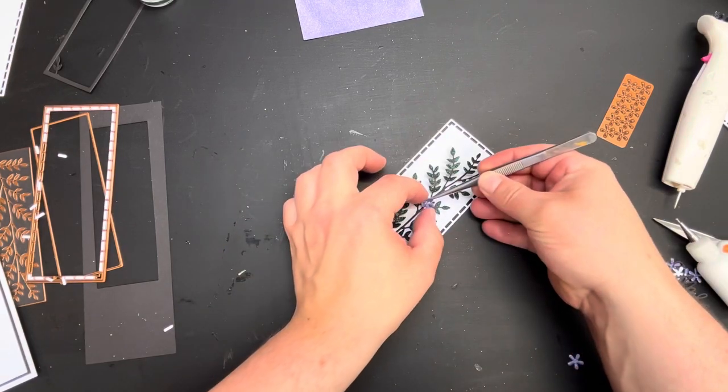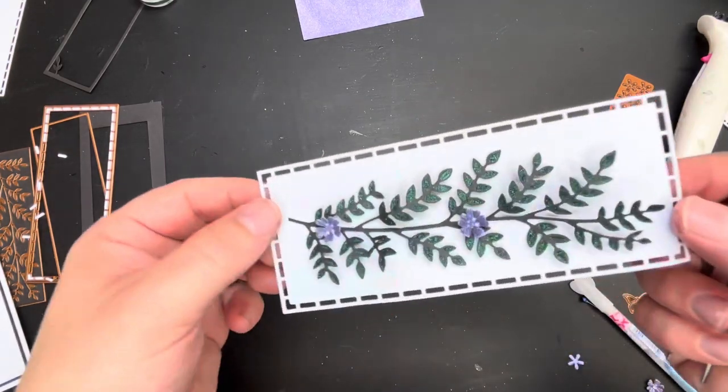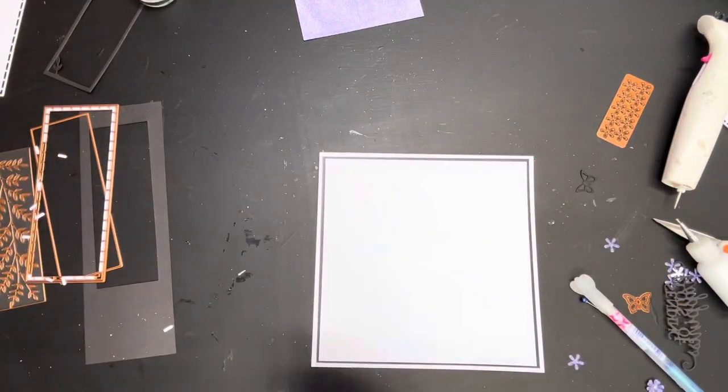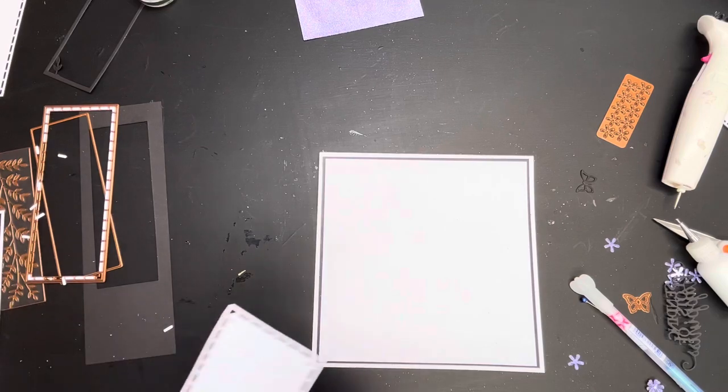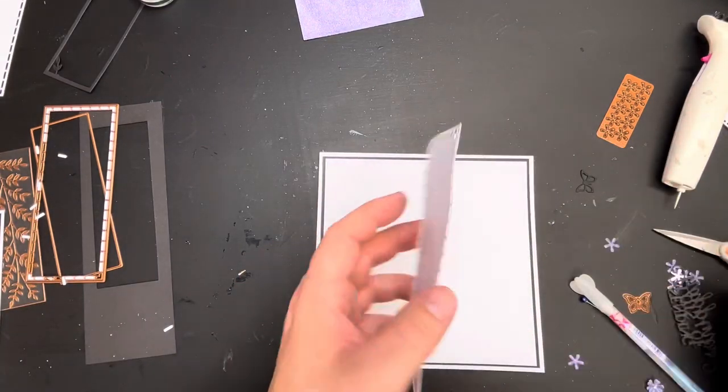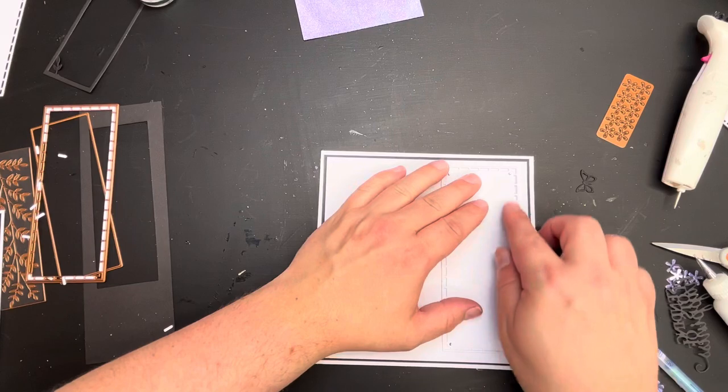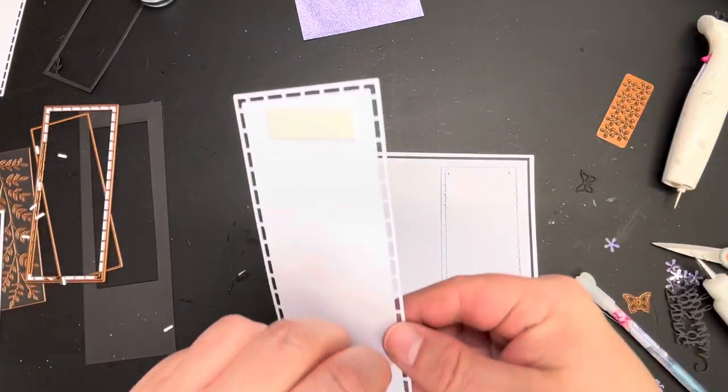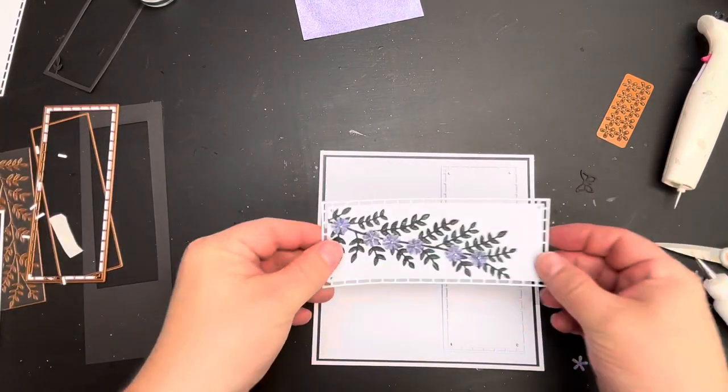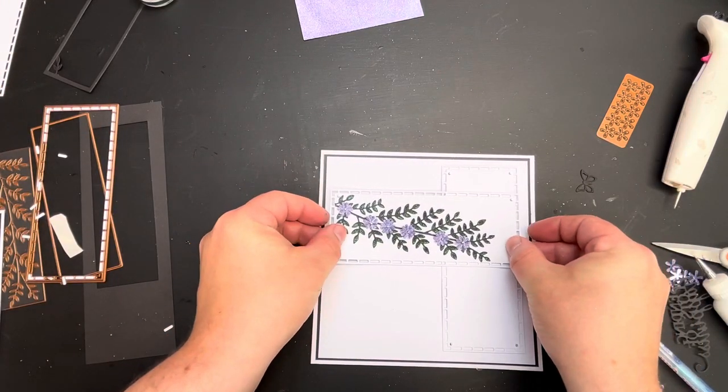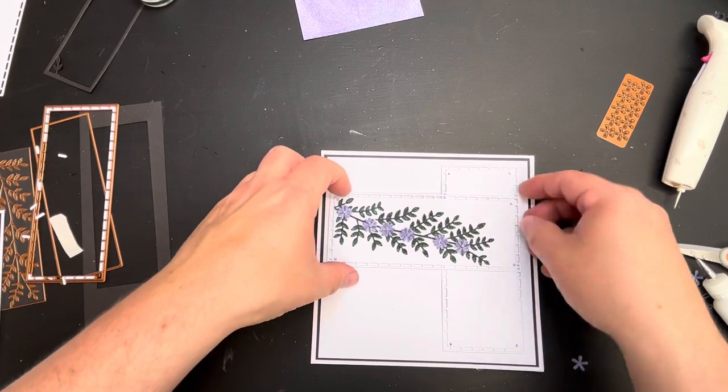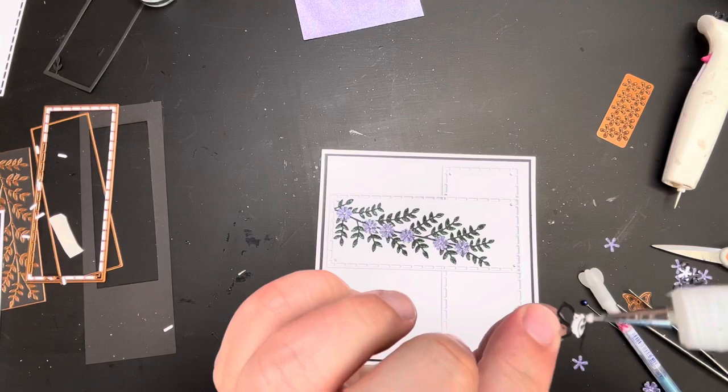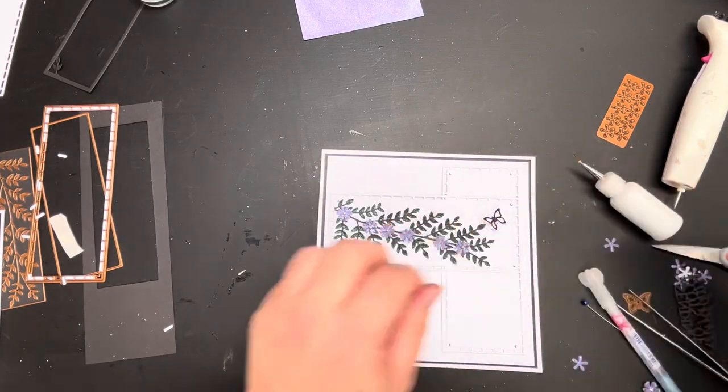Now when we get onto our card blank in a second, the card blank I have used is six and three quarter inches by six and three quarter inches. The black panel is six and a half inches by six and a half inches and the white panel is six and a quarter inches by six and a quarter inches. And then on top of that I've taken one of the panels from the edge die, the background panel, I've cut that and I've laid that down going vertically down my card.